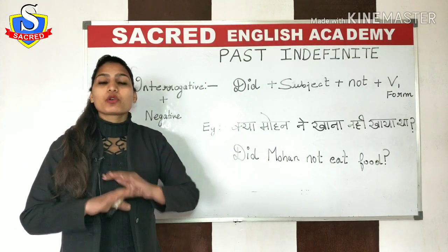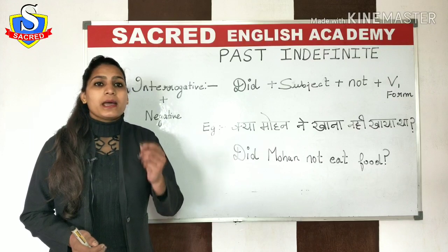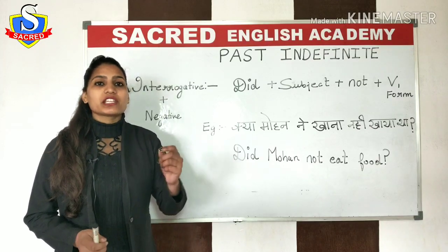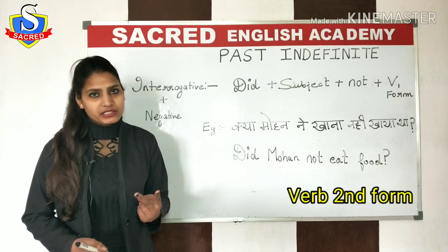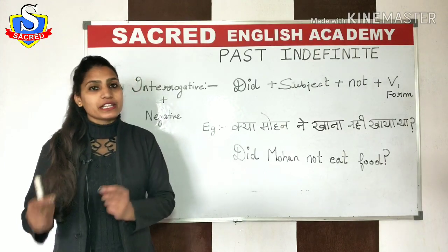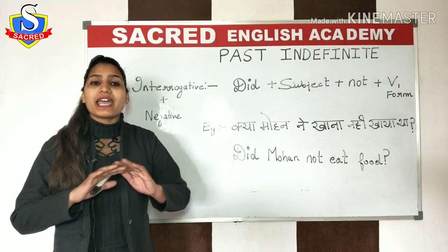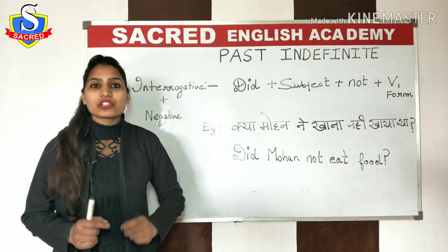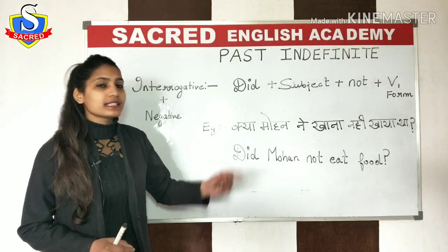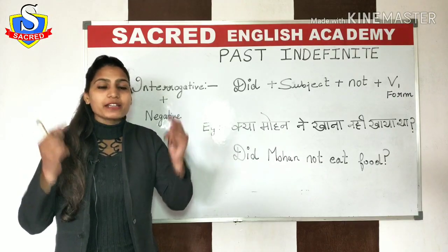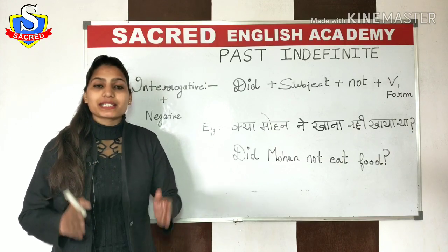One more thing — aapko bilkul bhi confused hone ki zaroorat nahi hai about kahan first form use karein aur kahan second form. Bas ek cheez apne mind mein rakhein: jab bhi aap affirmative ya simple sentence ki baat karte hain, verb ki second form ka istamal karna hai. Aur jab bhi negative, interrogative, ya interrogative plus negative ki baat karte hain, verb ki first form ka istamal karna hai. Don't get confused at all — just write down the rules from the board and stick to them so aap aane wale dino mein mistakes na karein.